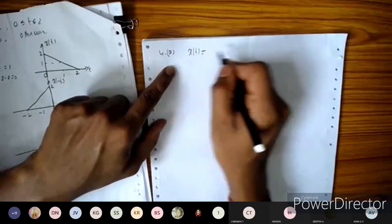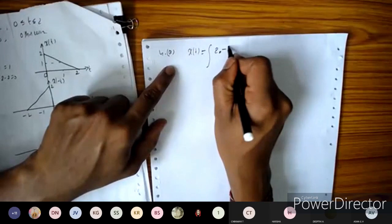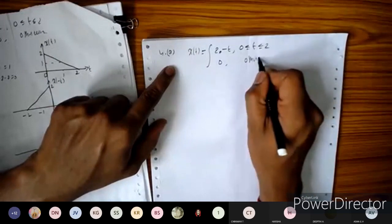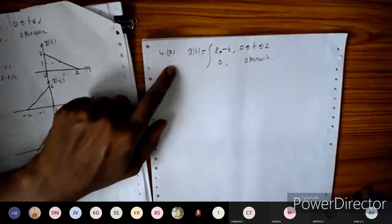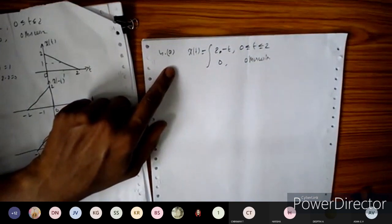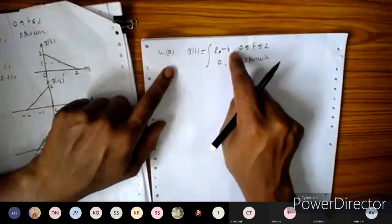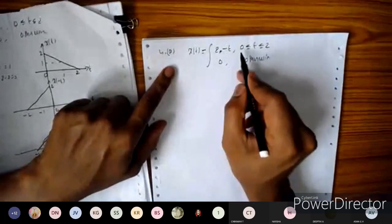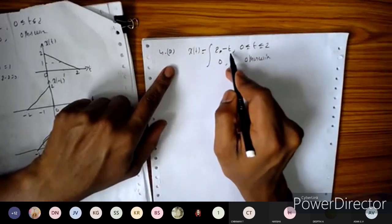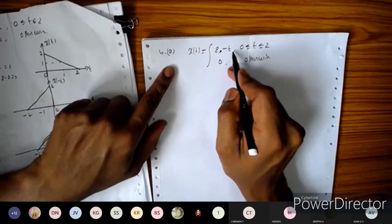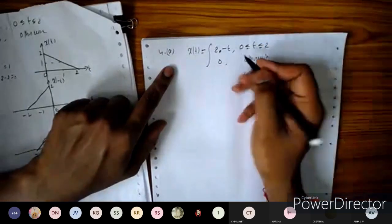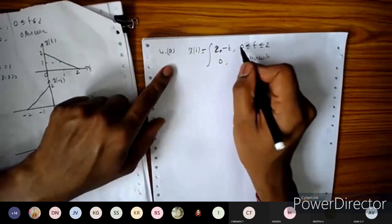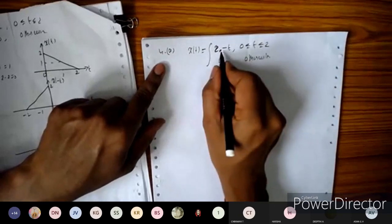The signal is given as x(t) = 2 - t for 0 < t ≤ 2, and zero otherwise. We need to find the even and odd components of this signal. The better method here is to use the graphical method, so let us plot the waveform.